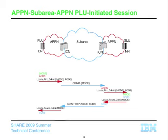That's not what happens. Why not? What side of the separate network picks the separate class of service? It's the secondary LU side, which is this side over here. So when this request comes in with the APPN class of service on it, this node says: I don't have to pick the separate class of service — that's not my job. So instead, all it does is send the separate CDNIT request through the separate network with whatever mode name came in. Maybe it's a real mode name if the PLU provided one, maybe it's a blank log mode name if the PLU provided blanks.